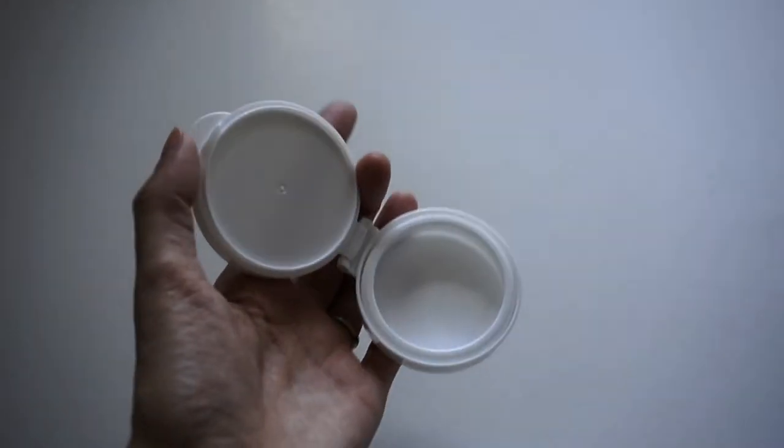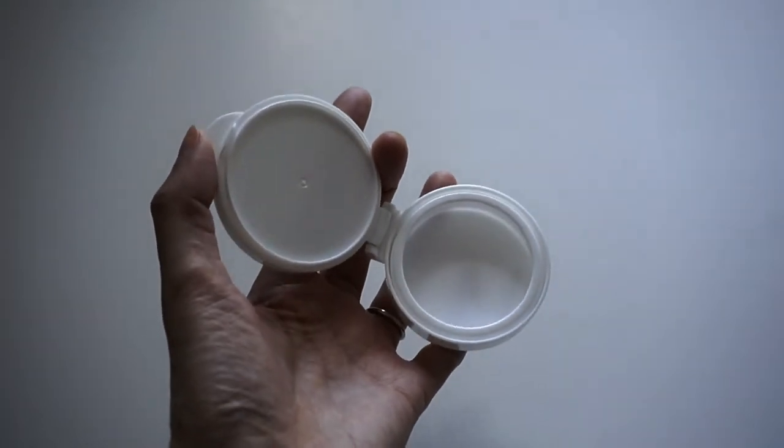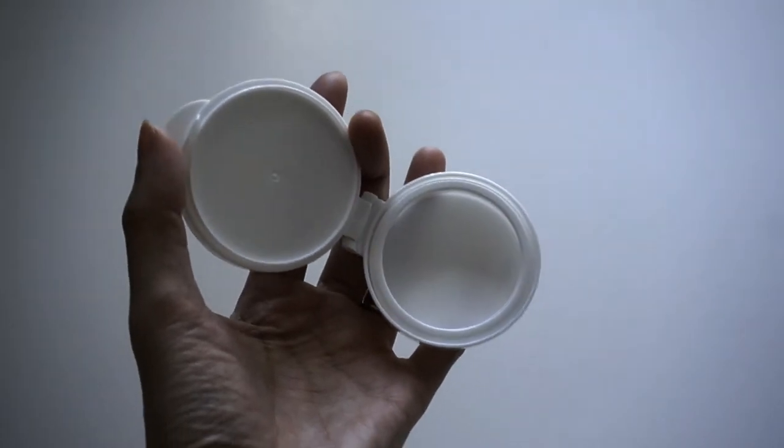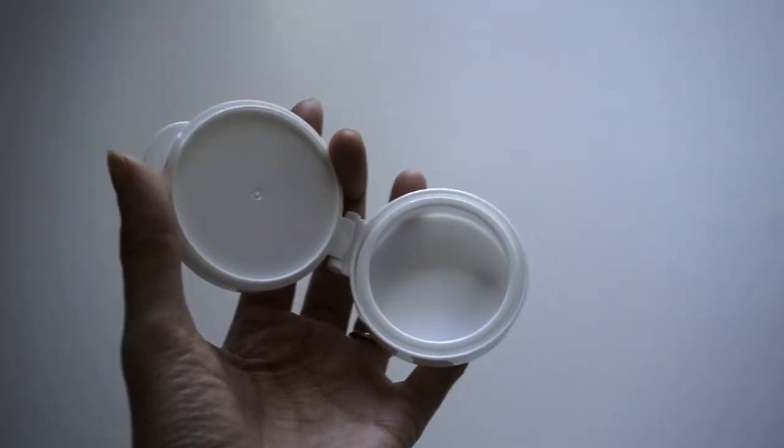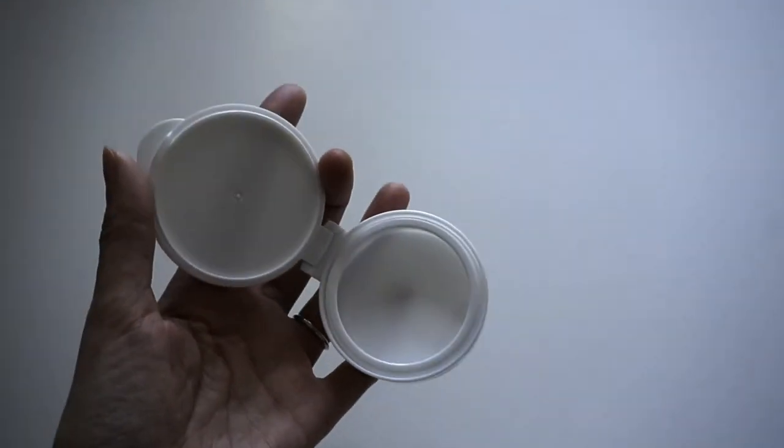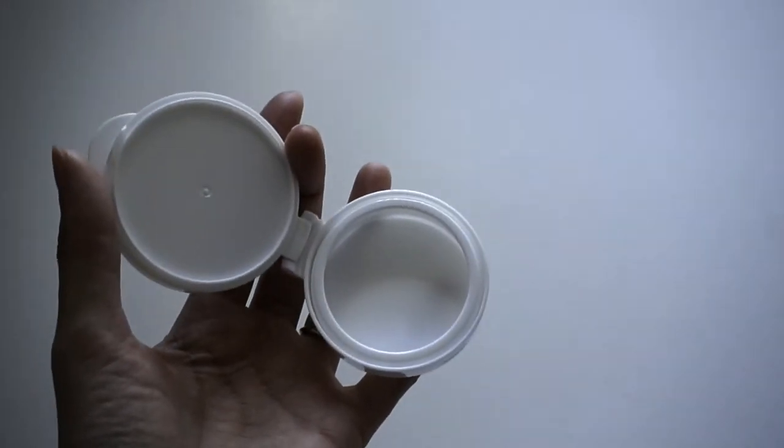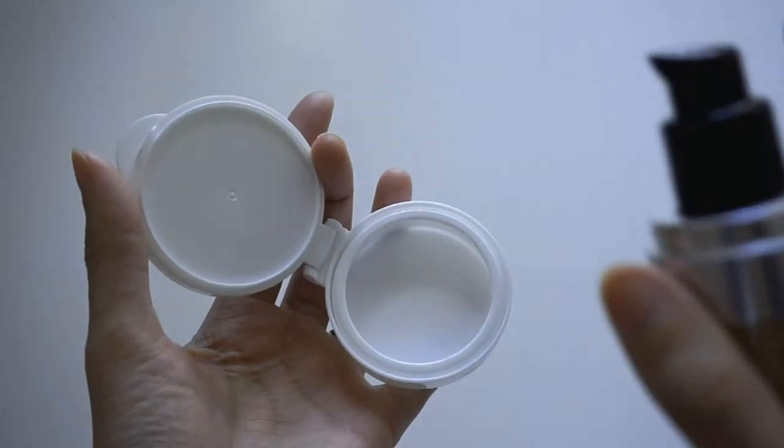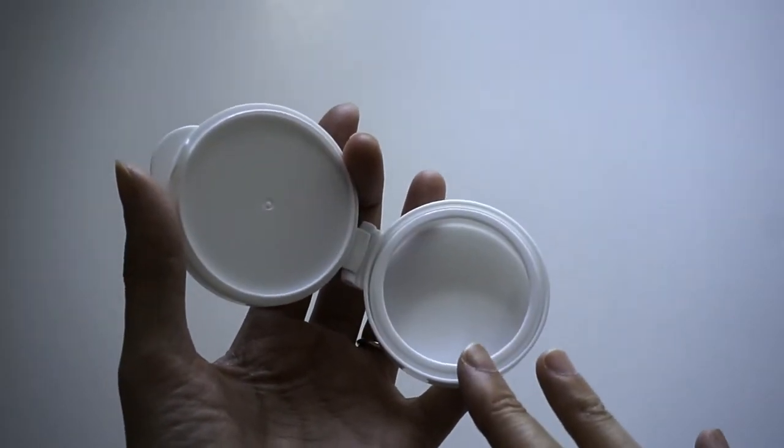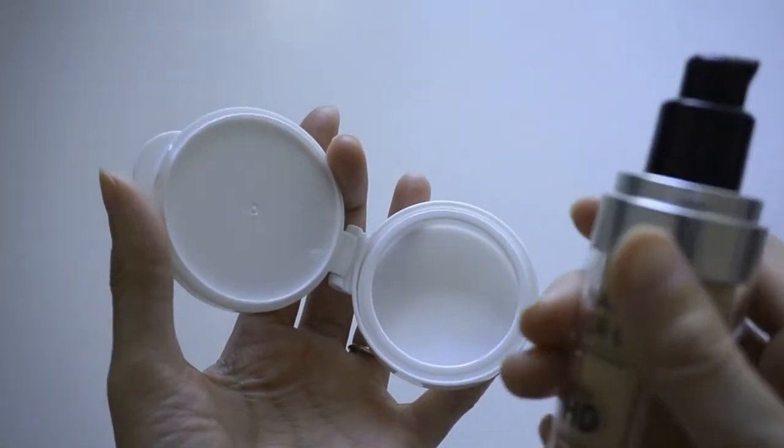Make sure it's fully dry before applying anything because there is alcohol in it and you don't want any of it, because alcohol does evaporate and it may change the consistency of your cushion foundation. With that being said, mine is fully dry now. I was told to put about, from all of these products, it should not be more than two-thirds of this container.